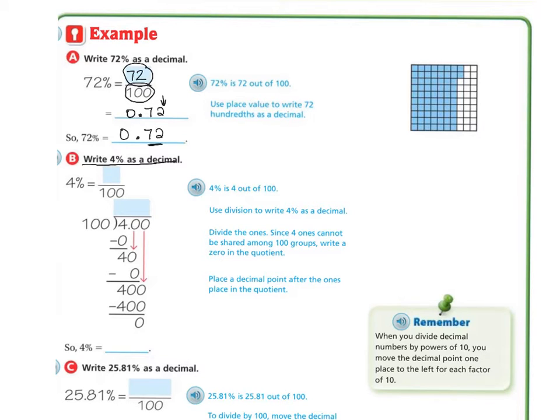Write 4% as a decimal. We're going to write 4 out of 100. If I'm doing this as a decimal, we've got 4 divided by 100. 100 cannot go into 4, so I add my decimal. I add a zero. Again, 100 can't go into 40, so add another zero. 100 goes into 400 four times. 4 times 100 is 400 with nothing left over. So 4% is 0.04.